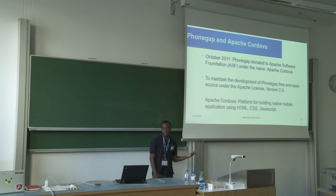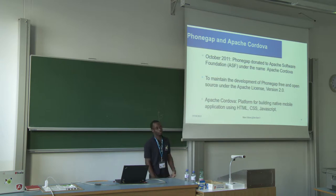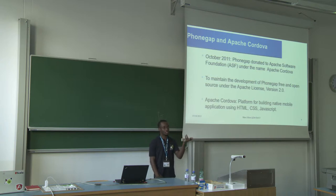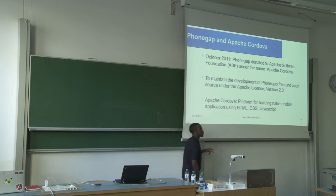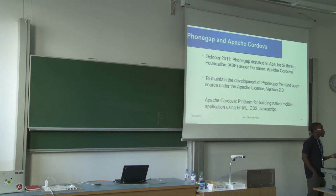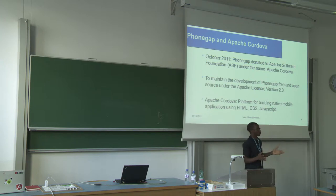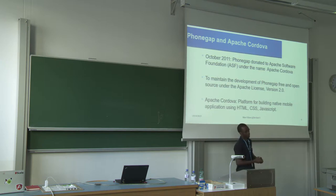Apache Cordova is essentially a platform for building native mobile applications using HTML, CSS, and JavaScript. The difference is that with PhoneGap, Adobe can add commercial services like PhoneGap Build on top of the open-source Cordova base. Both use the same underlying tool, but PhoneGap can have additional commercial services layered on top.